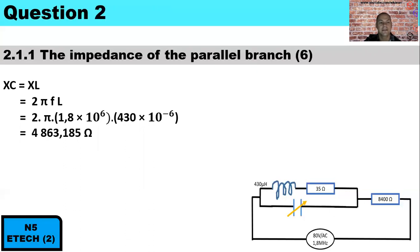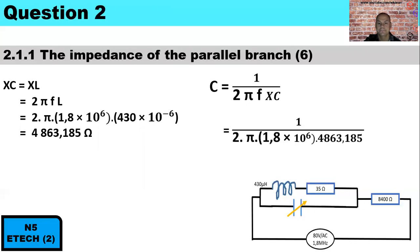The capacitive reactance equals 4863.185 ohms. We can now determine the value of the capacitor using 1 over 2πfXc: 1 divided by 2π times 1.8 megahertz times 4863.185 ohms. Therefore the value of the capacitor is 18,181 picofarads.